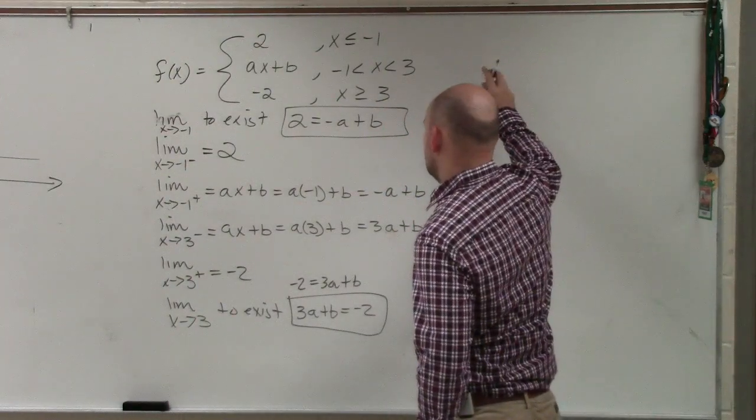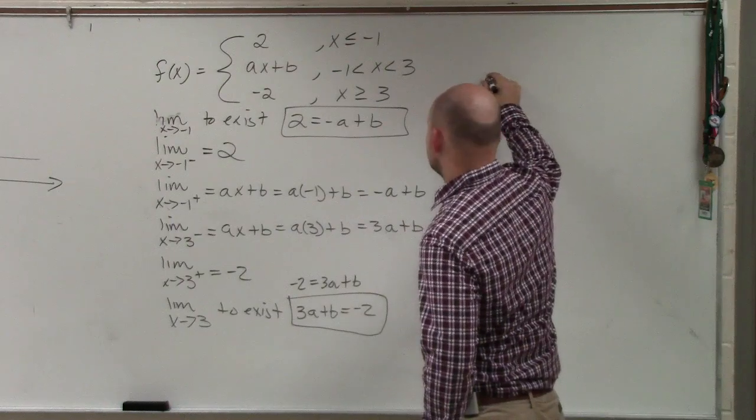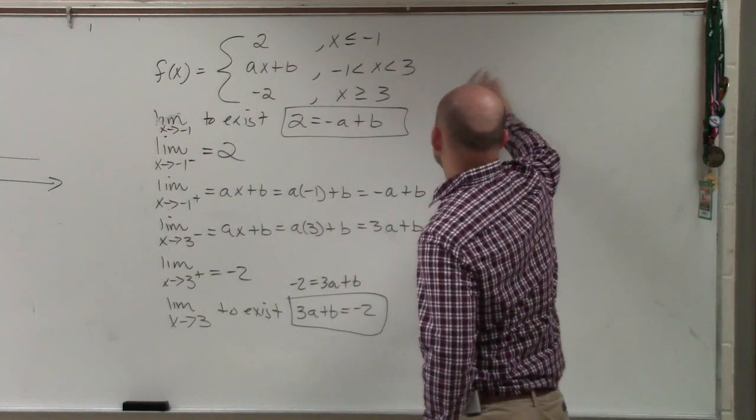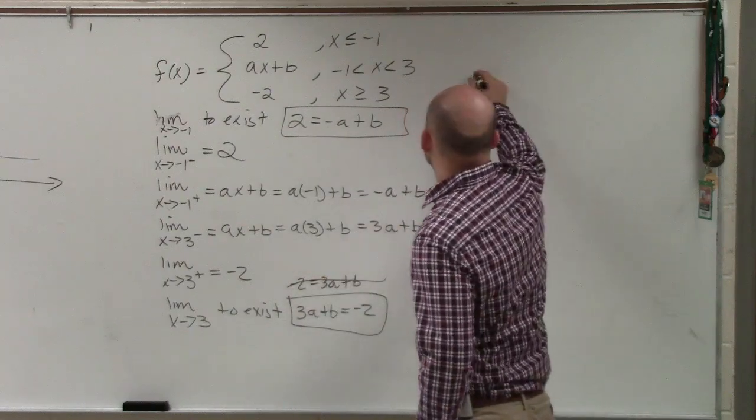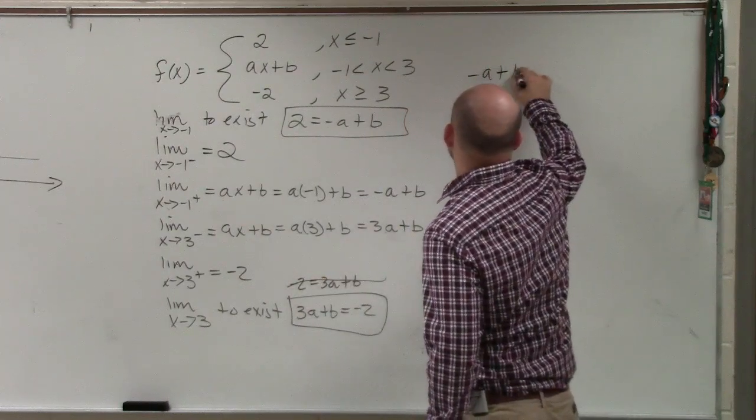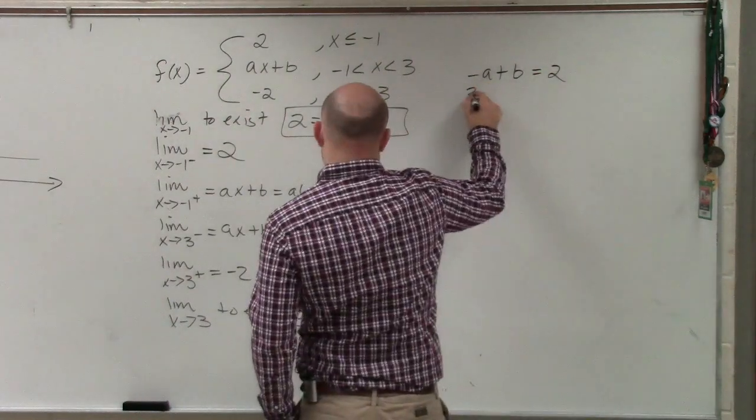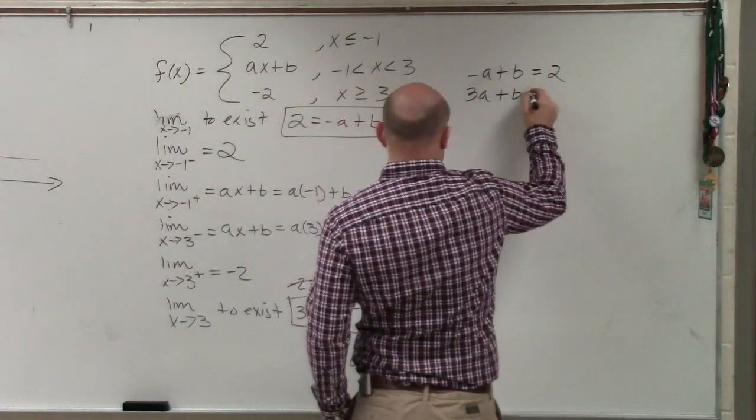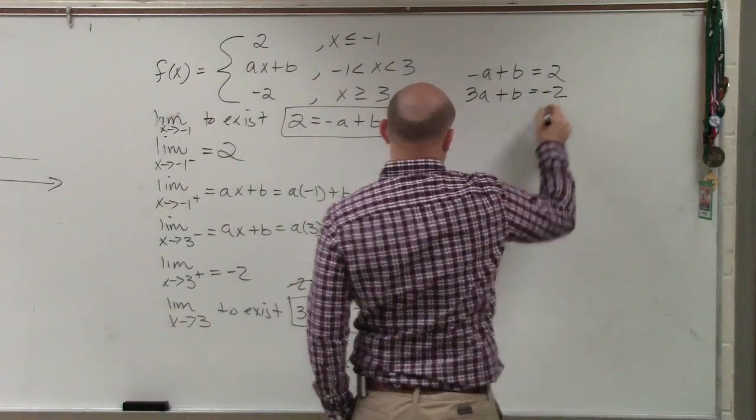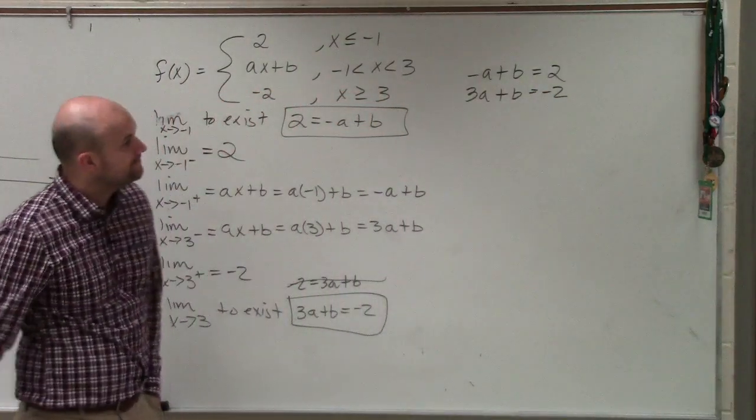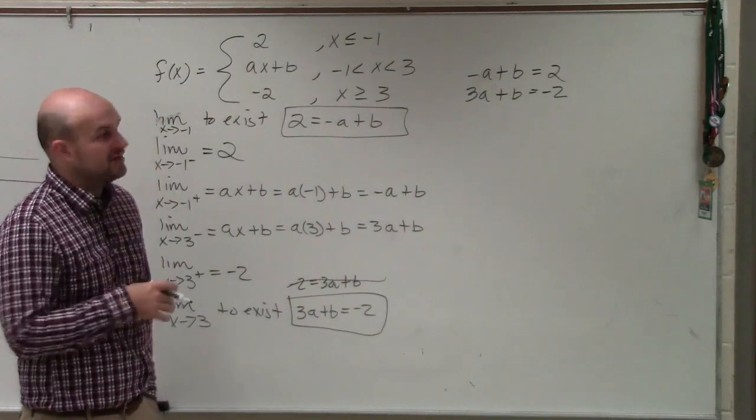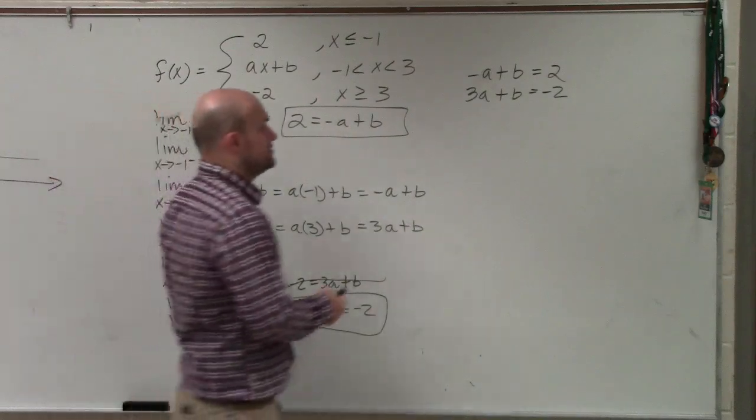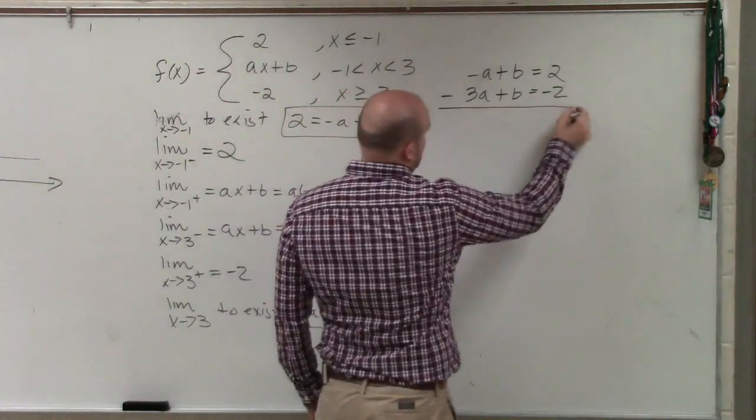what I have is a system of equations. I have two. Actually, let's rewrite it. Actually, I'm going to leave that like that. I'm going to rewrite this one. So I'll have negative A plus B equals two. And I have three A plus B equals negative two. And then to solve the system of equations, I could use substitution, or I could also use elimination. Or I could just subtract them.